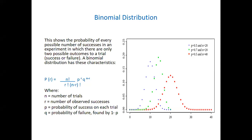You will see this formula: n factorial over r factorial times n minus r factorial, raised to power p, raised to power q, and q raised to power n minus r. It's just jargon but very simple. I wouldn't know if they even want you to be calculating it - I don't like you calculating that, because all you need to know is how it works and how to use computer to run it.